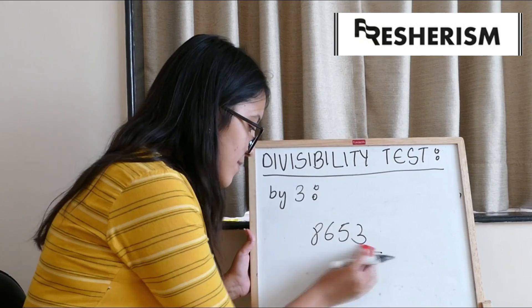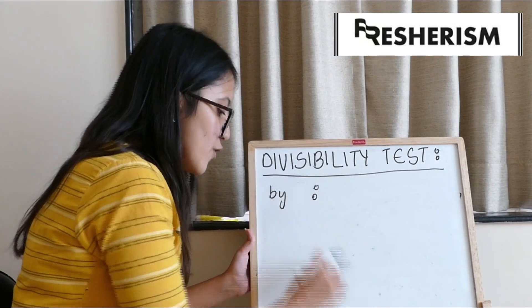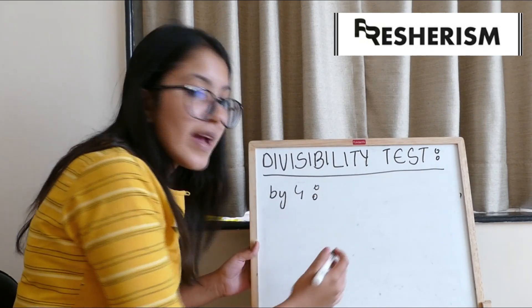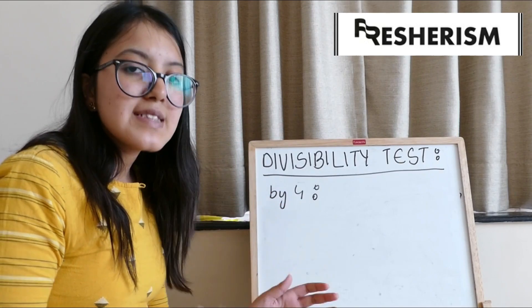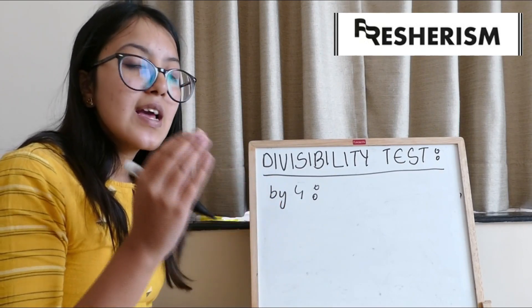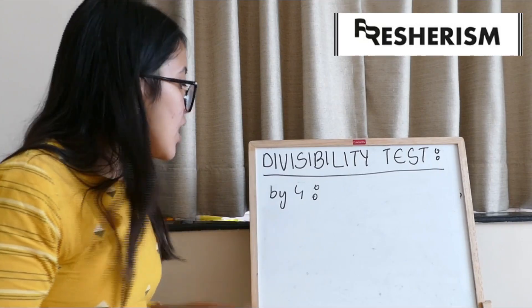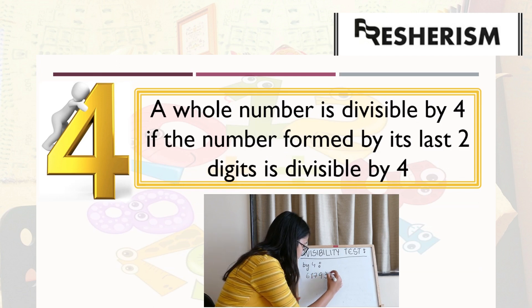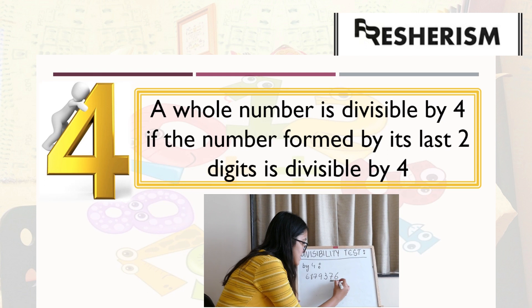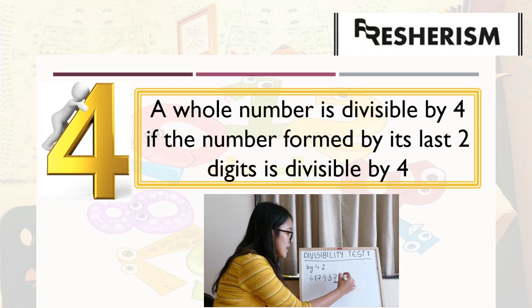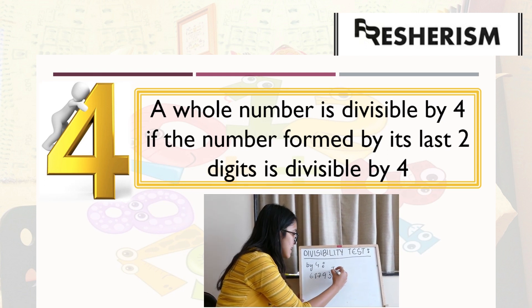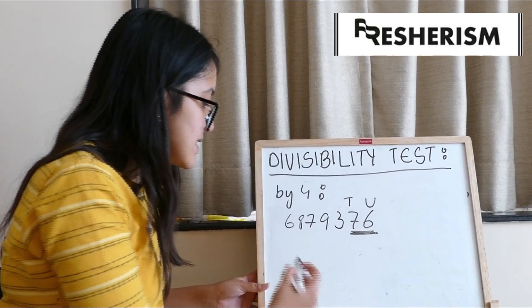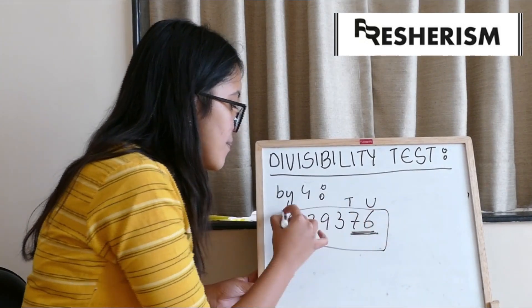Moving on to our next divisibility test, which is by 4. Any number where the number formed by its units place and tens place digit is divisible by 4, the whole number would be divisible by 4. For example, 6,879,376. We know that 76 is at the units and tens place, and 76 is divisible by 4. Hence, this whole number would be divisible by 4.